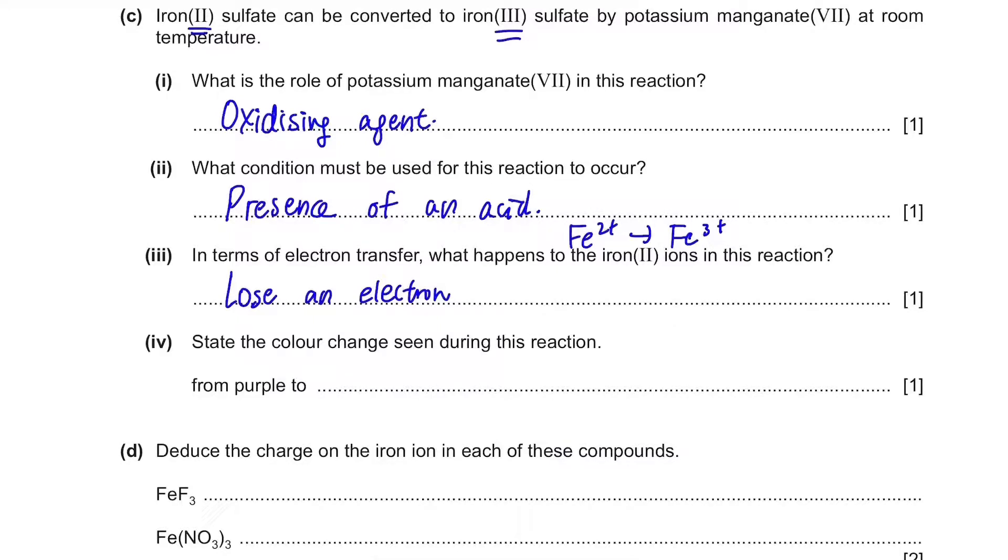State the color change seen during this reaction. When it's Fe2+ sulfate, it's purple. But if it's Fe3+ sulfate, it has no color. It's colorless.